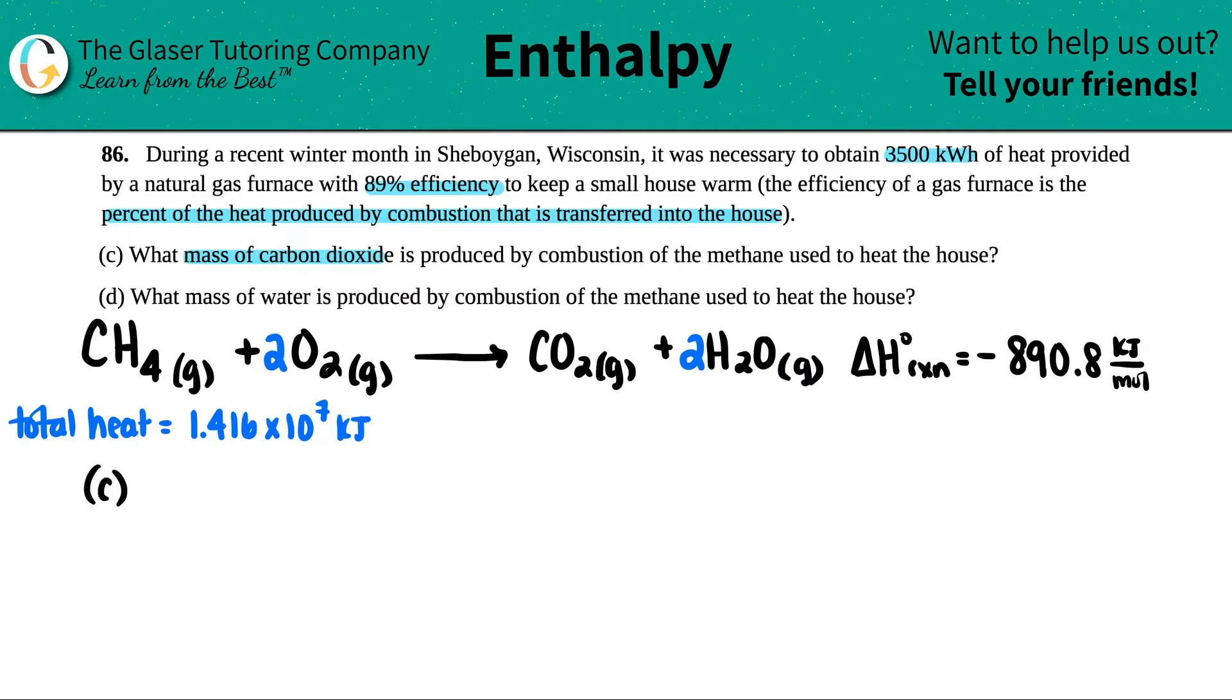But now let's just figure out how much mass of carbon dioxide. So the first thing that we have to do is basically we can use, well, we have to use the total heat and the delta H value to get the mass of carbon dioxide. In this case, the grams equals question mark.